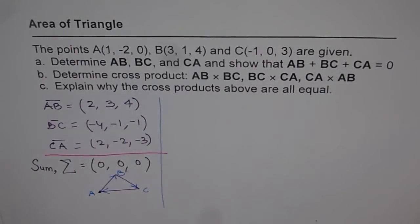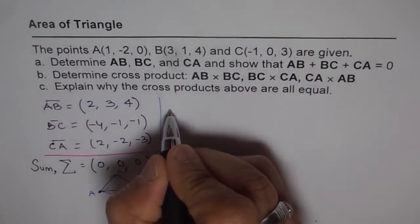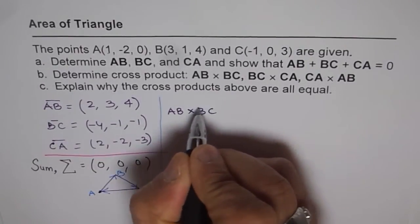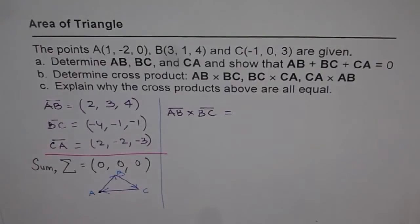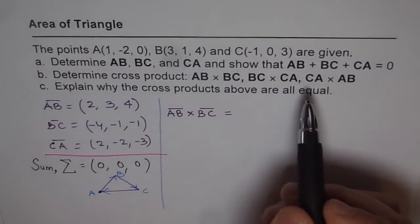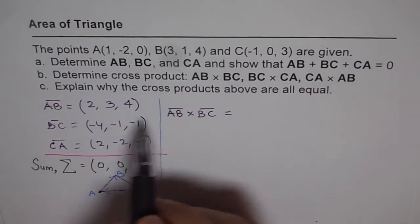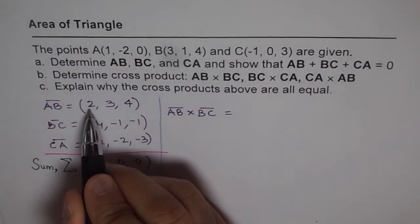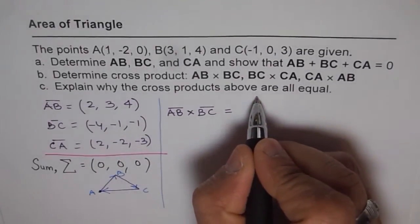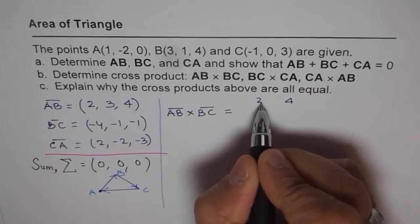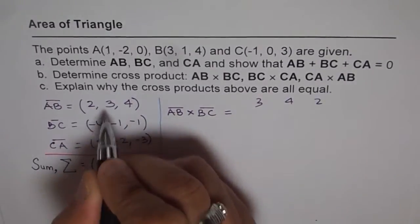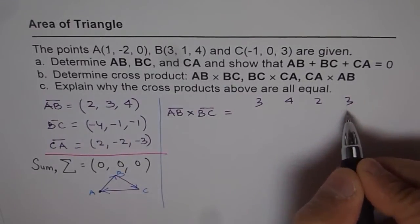Now let's move on with cross product. Let's do AB × BC. I'll use the row method. AB is (2, 3, 4) and BC is (-4, -1, -1). We write the row starting with the middle number of AB, which is 3: so we write 3, 4, 2, 3. Then for BC, starting from its center: -1, -1, -4, -1.